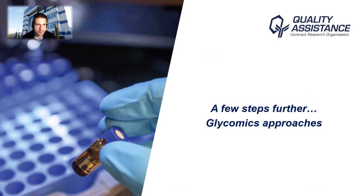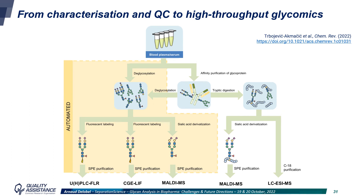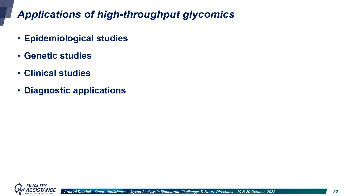To conclude, I will talk about glycomics approaches that are not widely used today in biopharma but can be very useful. The idea is to use methods commonly used in biopharma but to automate the sample preparation to make high-throughput analysis possible. Some steps such as deglycosylation, labelling, or SPE purification can be automated, and then the samples can be analyzed by different methods such as LC or CE with fluorescence detection, MALDI-MS, or LC-MS. The applications of high-throughput glycomics include epidemiological studies, genetic or clinical studies, or diagnostic applications, and it can also be useful in early development for glycoprofiling of biopharmaceuticals when you have many samples to screen, or during manufacturing processes to optimize them.